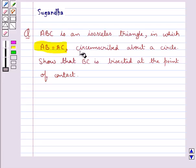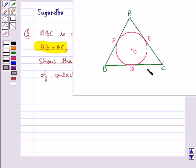equal to AC, circumscribed about a circle. Show that BC is bisected at the point of contact. This is the figure in which we have triangle ABC, circumscribed about a circle with center O.